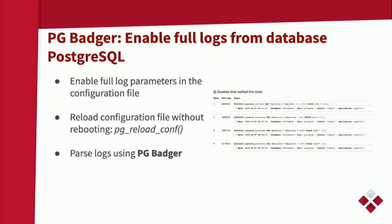It will be a little tricky to enable PG Badger profiling in production, but it is not that hard if you pre-set it up. What you need to do is enable the full logging capabilities of PostgreSQL in the configuration file — you uncomment those lines. Then you reload your PostgreSQL configuration without rebooting, using the pg_reload_conf command. Then you can pipe those logs into PG Badger to be analyzed. That's how you enable or disable that logging to be piped through PG Badger in a hot environment.